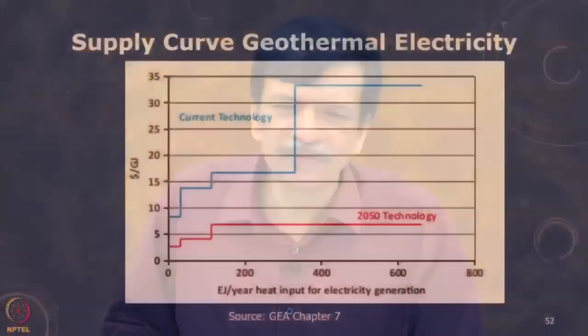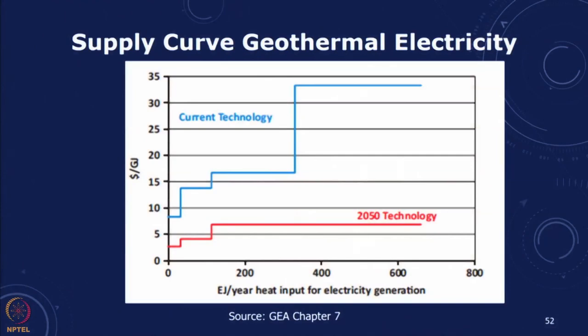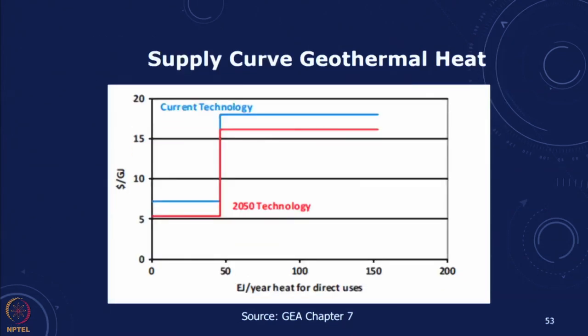The supply curve for geothermal with current technology shows we can get of the order of 200 to 300 exajoules at different prices, and with new technology the prices will go down. That covers both geothermal electricity and geothermal heat supply curves. Similar supply curves are available for many of these sources and are available in the Global Energy Assessment resource chapter.